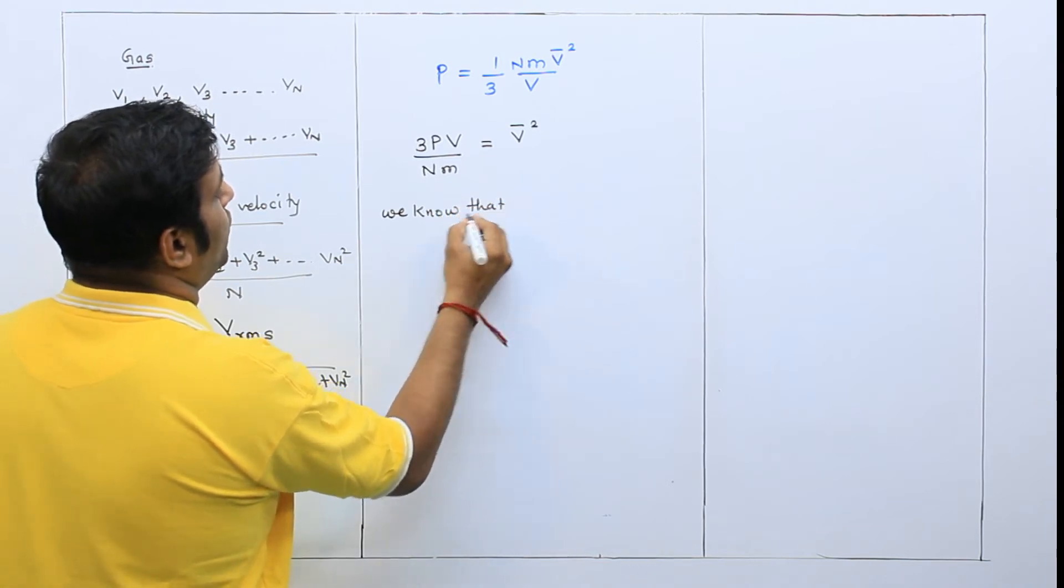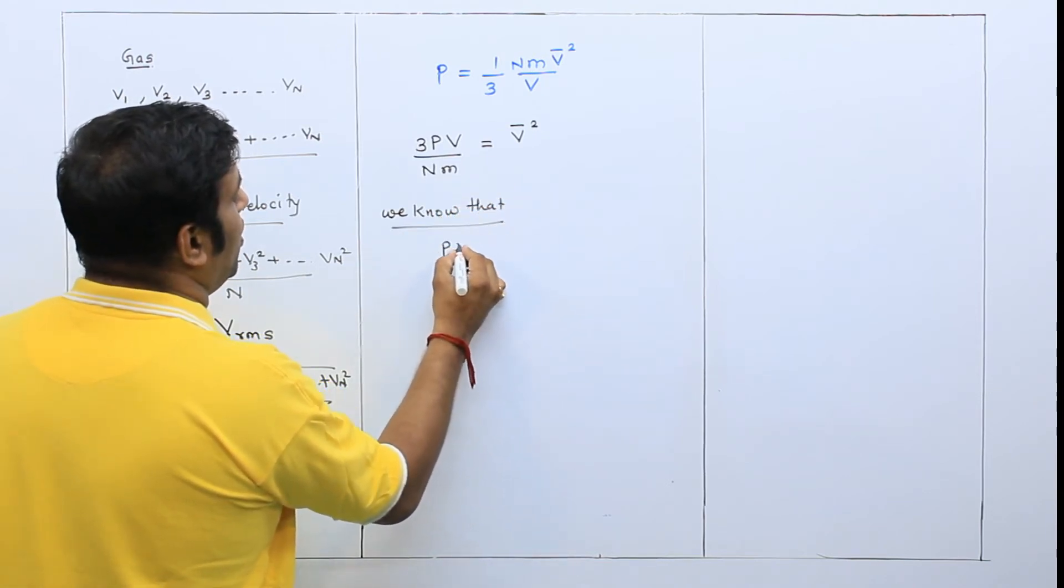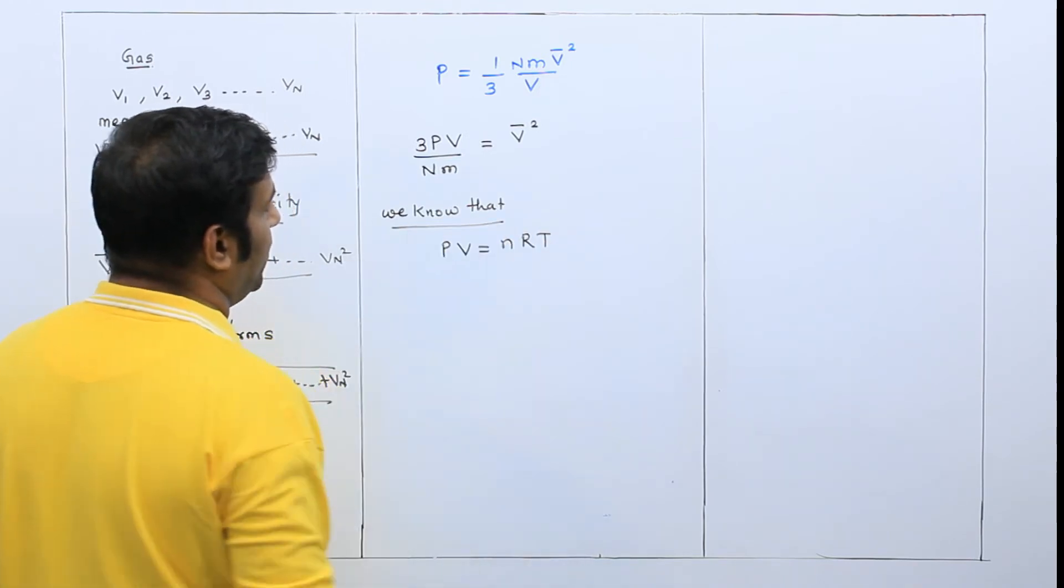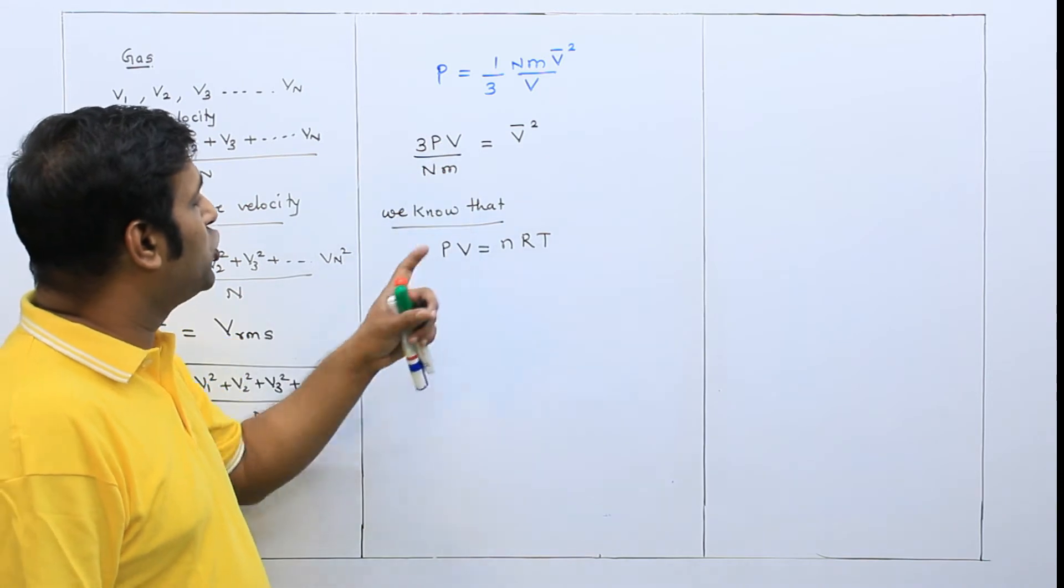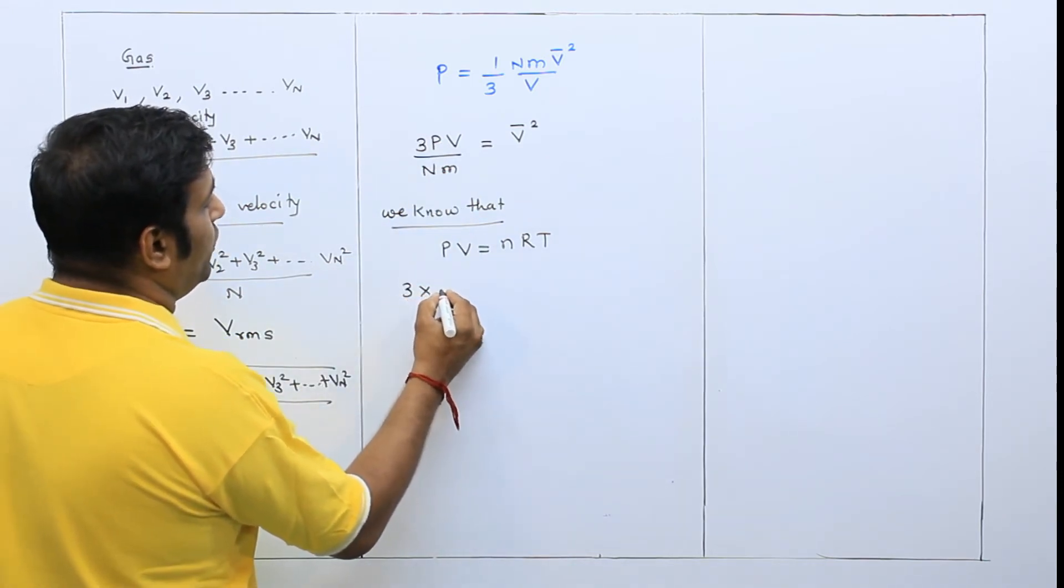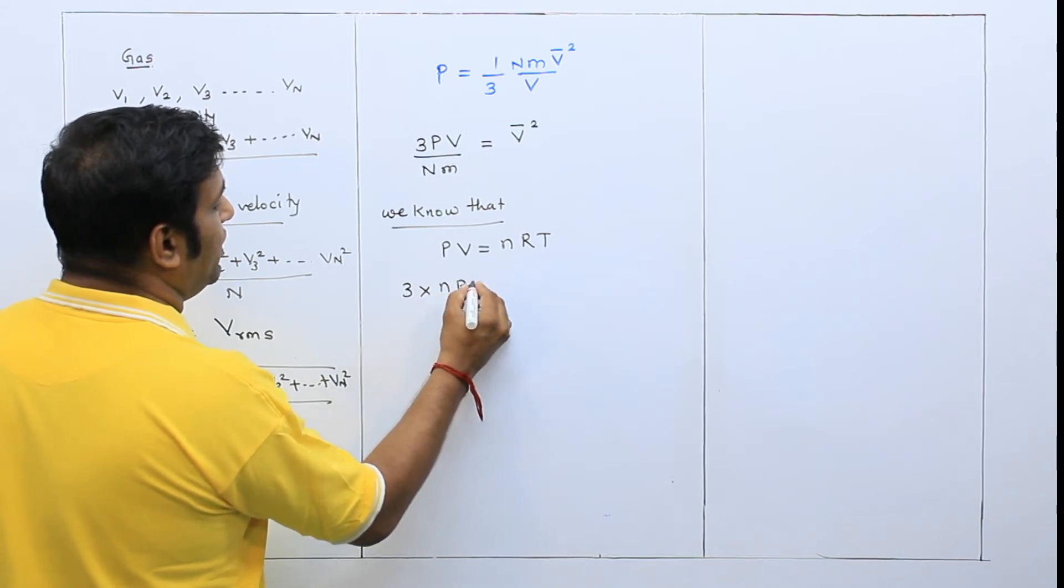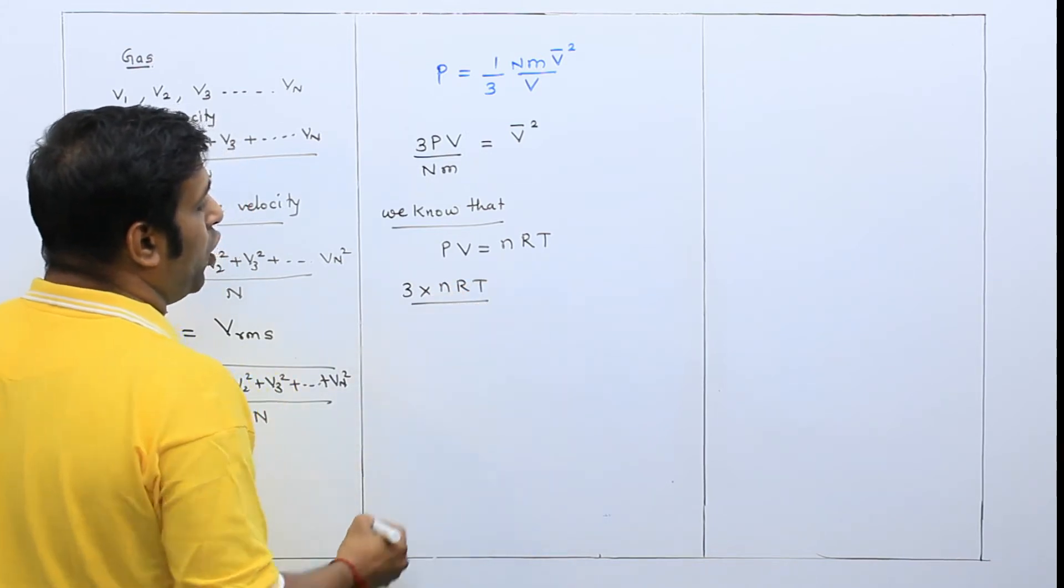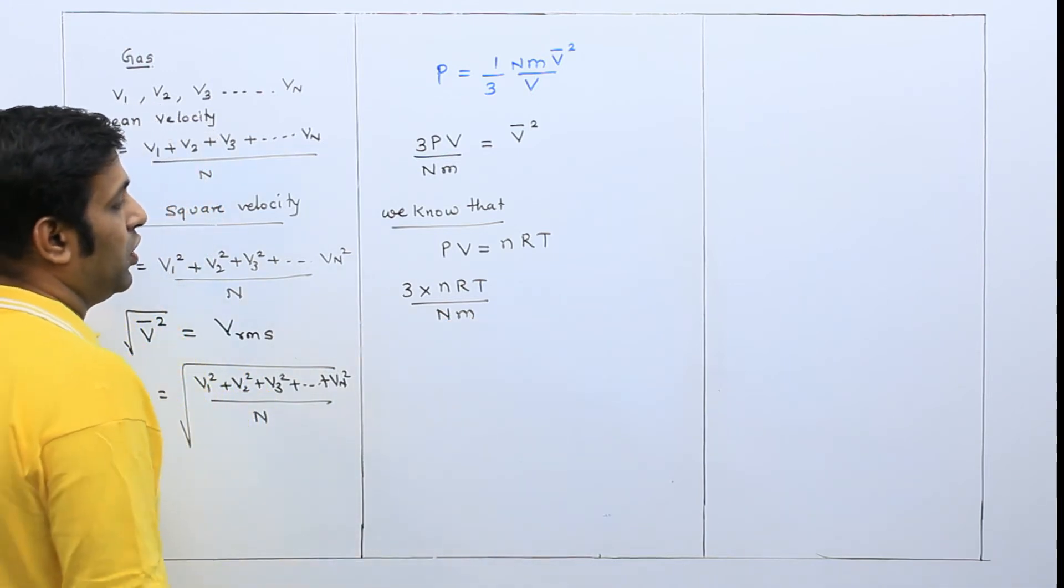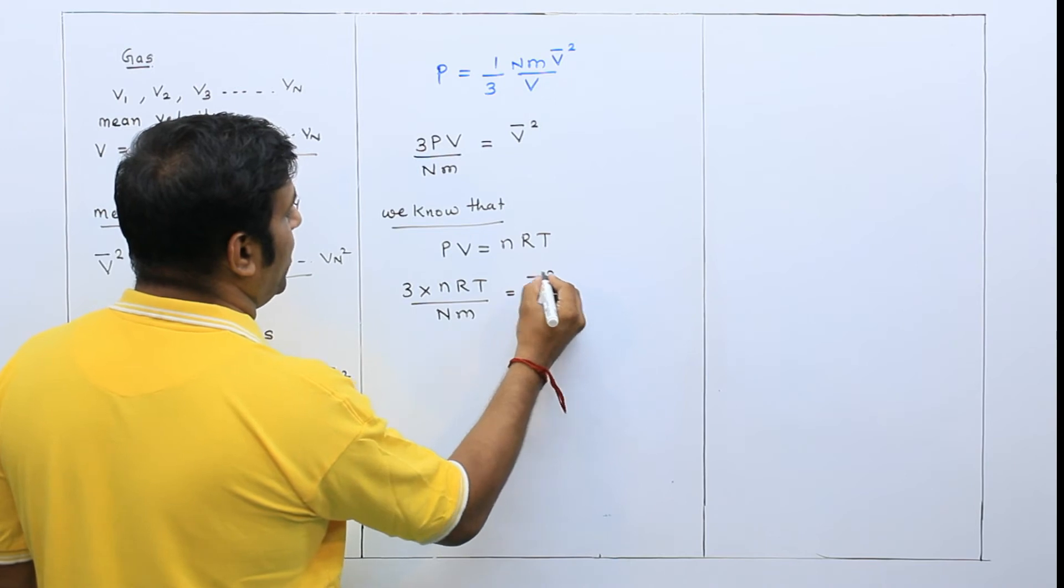What do we know? Ideal gas equation PV is equal to nRT. So instead of PV, I can substitute nRT. So 3 into nRT upon Nm is equal to v bar square.